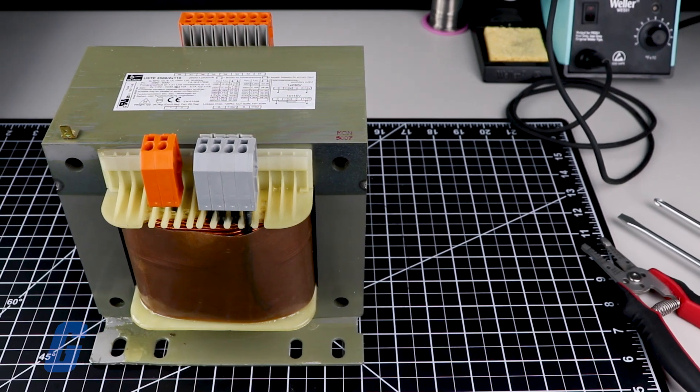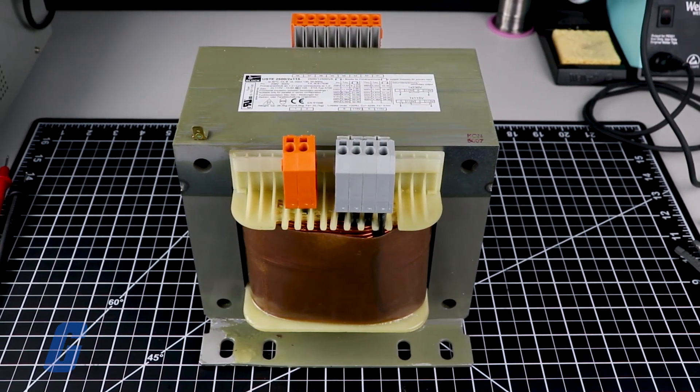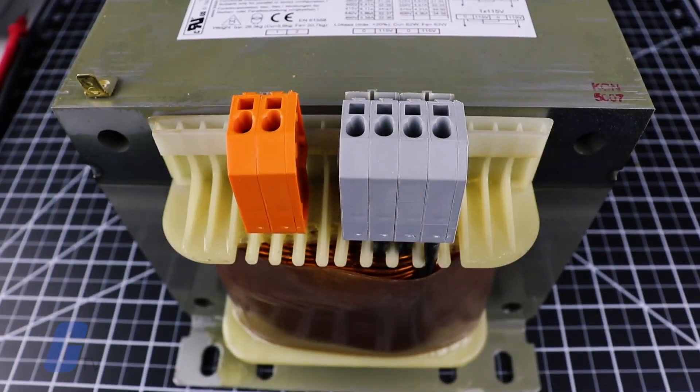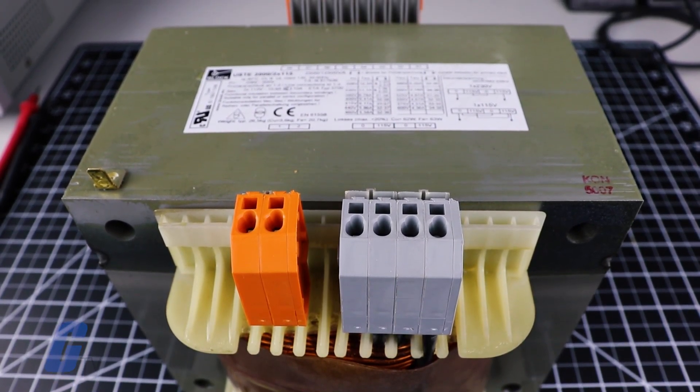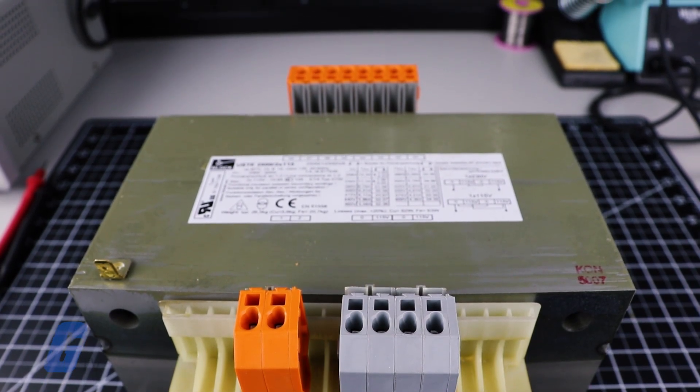USTE Series General Purpose Transformers from BLOCK are designed for universal control and isolating transformer applications. The USTE is designed to support electrical isolation on both the input and output sides of three primary applications.